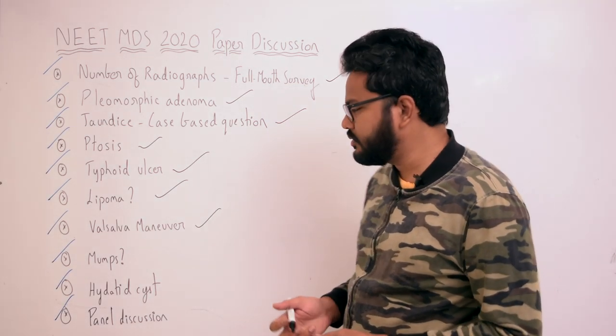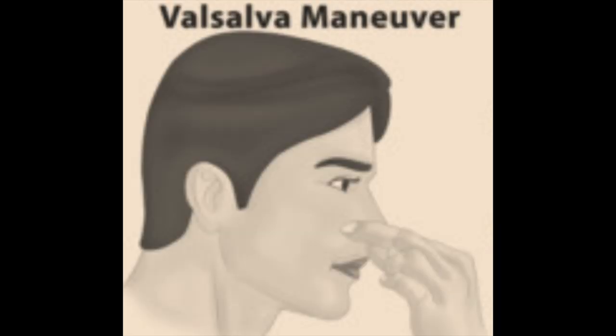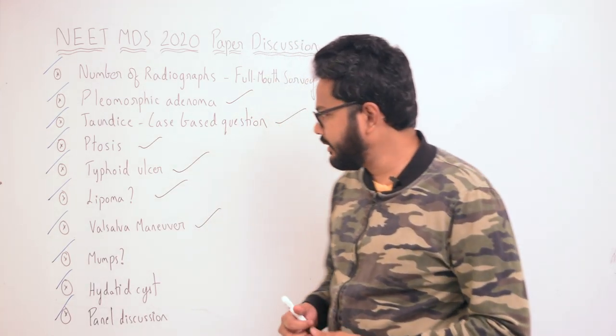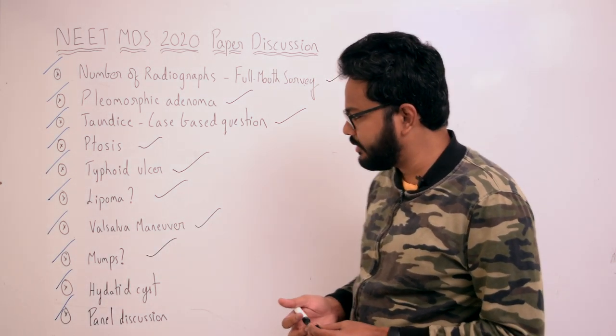Regarding the Valsalva maneuver: the anterior vibrating line is an imaginary line lying at the junction between the immovable tissues of the hard palate and the slightly mobile tissues of the soft palate. It can be located by asking the patient to perform the Valsalva maneuver — closing the nostrils firmly and gently blowing through the nose — or by asking the patient to say 'ah' in short vigorous bursts. The anterior vibrating line is cupid's bow shaped.